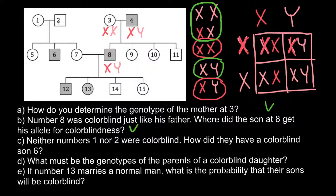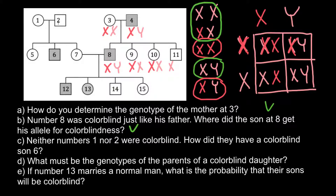Question C: neither number 1 nor number 2 were colorblind — how did they have a colorblind son, number 6? We are going to use the same pedigree logic used to solve the previous problem. Let's put genotypes for all the progeny of this couple. All daughters who show normal phenotype would be heterozygous — one defective chromosome, one normal. The son's genotype would also be one normal X chromosome and a normal Y chromosome.